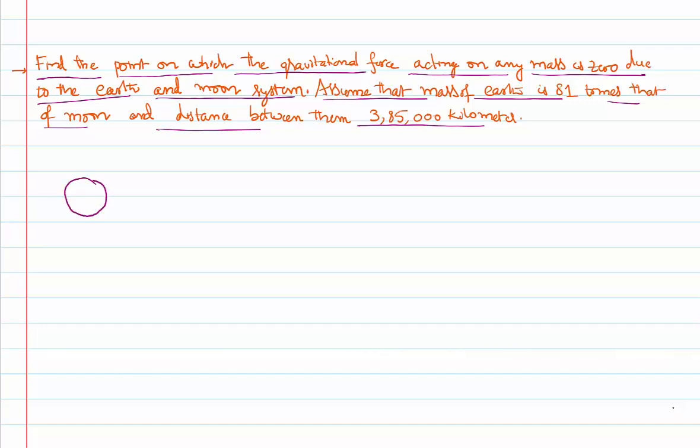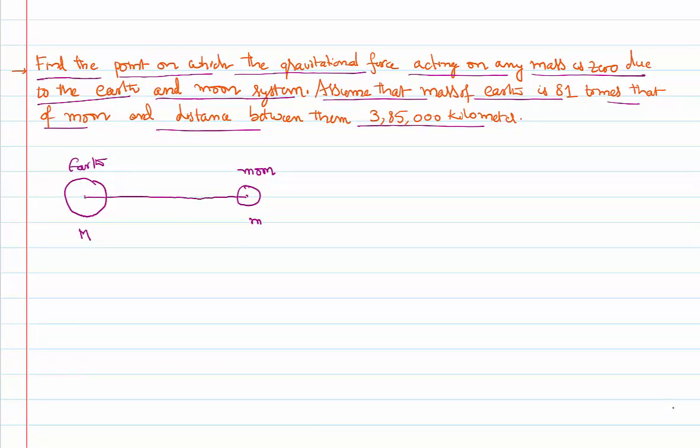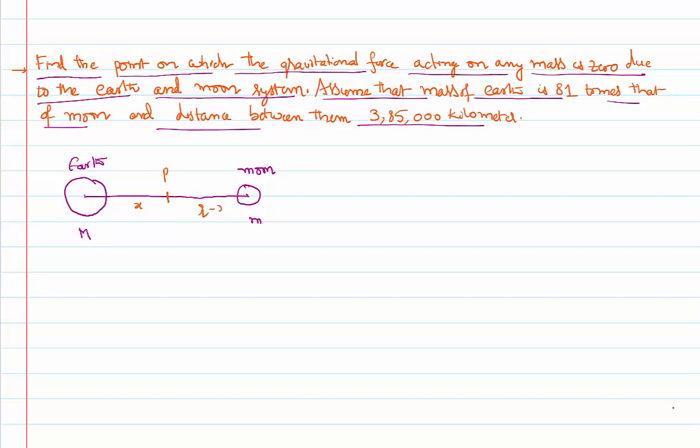So let us try identifying how to solve this problem. Assume this is the earth and this is the moon. Let us assume mass of the earth is capital M, mass of the moon is small m because it is small. It is given that they were separated by some distance, and we are saying let us find a point P who is at a distance x from earth, or else you want to calculate at a distance between the earth and the moon. The other distance becomes automatically r minus x.